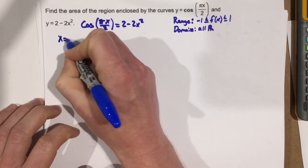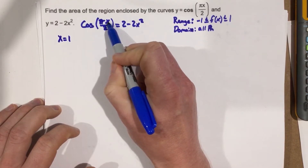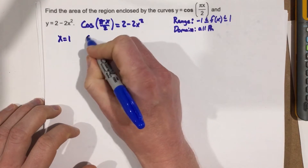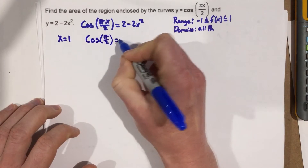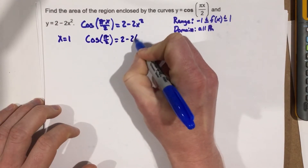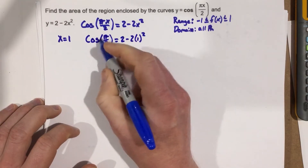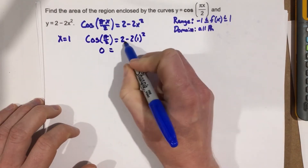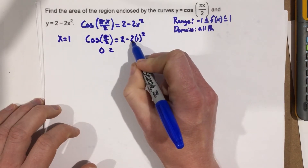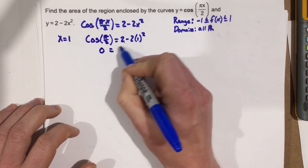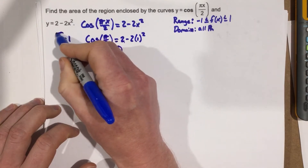If x equals 1, when you plug that in, you get cosine of pi over 2 equal to 2 minus 2 times 1 squared. We know cosine of pi over 2 is 0. And 2 minus 2 times 1 squared equals 2 minus 2, which is 0. So they end up equaling each other, meaning x equals 1 is one of the solutions.